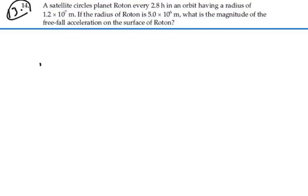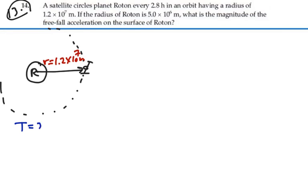Based on the original data here, we have this planet Roton and we have a satellite traveling around this planet in an orbit and the radius of that orbit is 1.2 times 10 to 7 meters and the period of time is given as 2.8 hours.